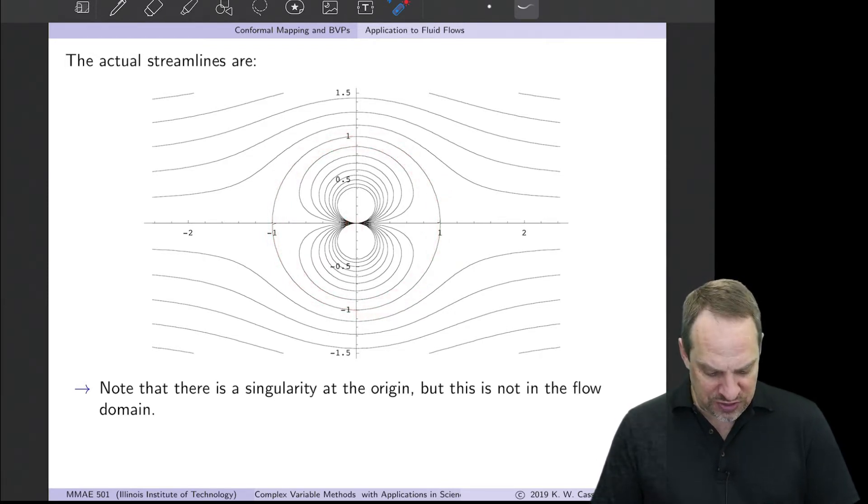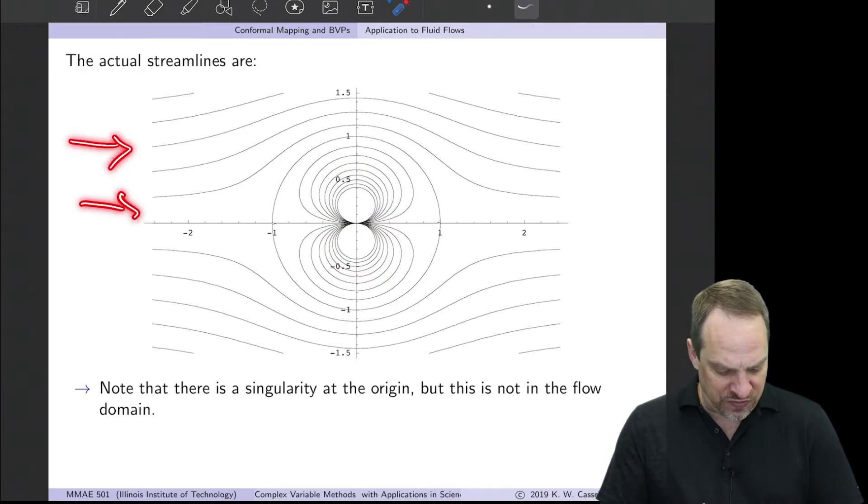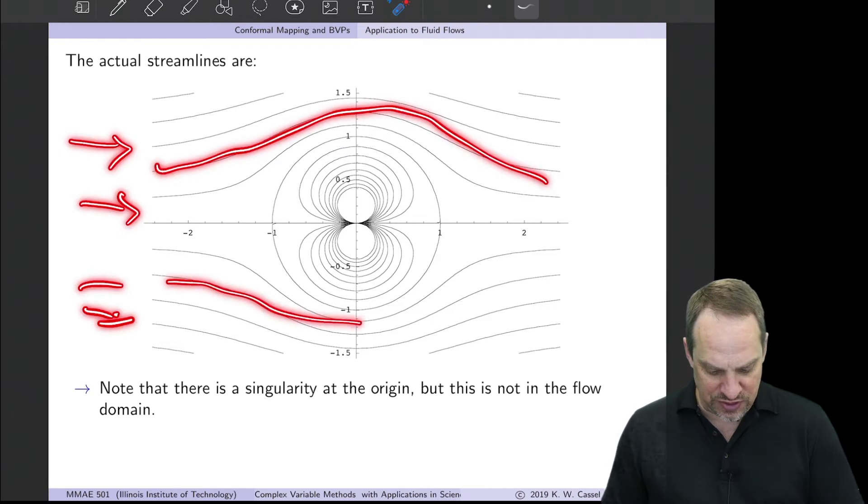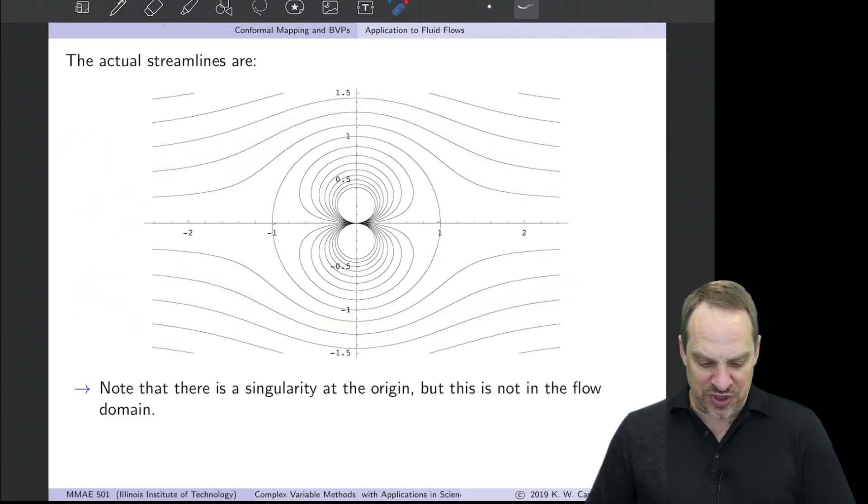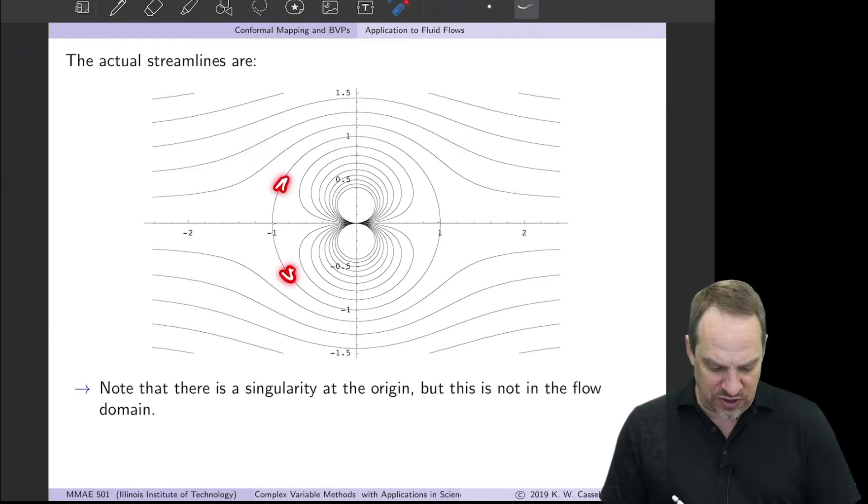You can see the doublet that is throwing fluid out to the left and sucking it back to the right, and then you have the uniform flow coming in from the left and passing around the cylinder. So those are the streamlines, and you can put little arrows on them if you'd like that show the directions of the flow.